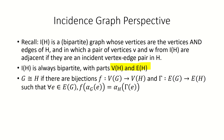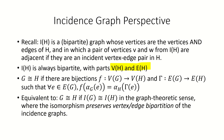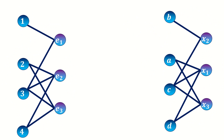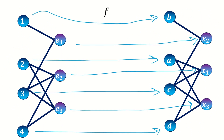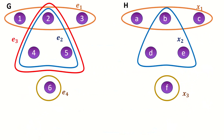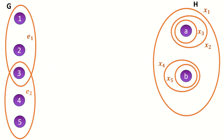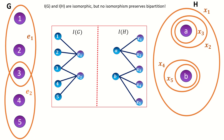If you look closely at our new definition of hypergraph isomorphism, you'll see that it's equivalent to saying that the incidence graphs of G and H are isomorphic, where the isomorphism preserves respective bipartition — meaning it maps edge vertices in I(G) to edge vertices in I(H), and vertex vertices in I(G) to vertex vertices in I(H). Looking back at our previous example, notice that the incidence graphs are isomorphic and our chosen isomorphism preserves vertex and edge parts. Also, looking back at our example of non-isomorphic hypergraphs, notice how the incidence graphs are not isomorphic. Here's an example of non-isomorphic hypergraphs whose incidence graphs are isomorphic, but where there's no isomorphism that preserves bipartition.